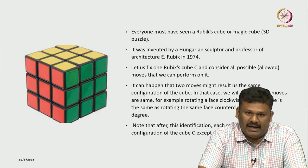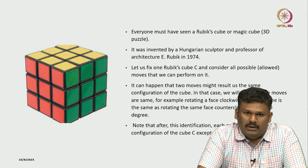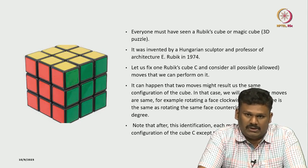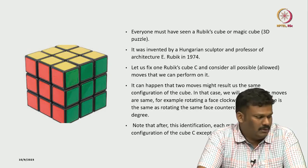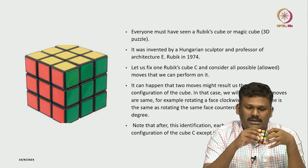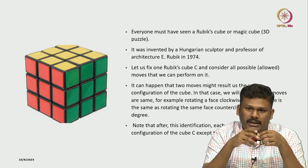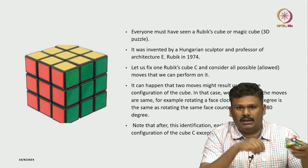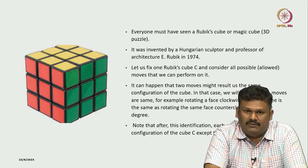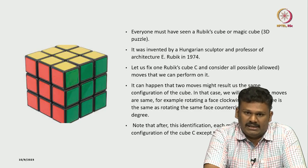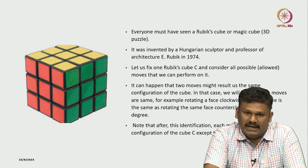Let us be very practical. I want to introduce this group that is actually coming from all possible moves that we can apply on a Rubik's cube. All of you must have seen what a Rubik's cube is. It is also called a magic cube - it is a 3D puzzle invented by a Hungarian sculptor and professor of architecture, E. Rubik, in 1974. Let us see how groups naturally appear in solving the Rubik's cube puzzle.